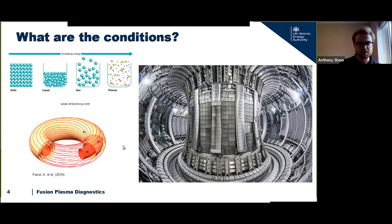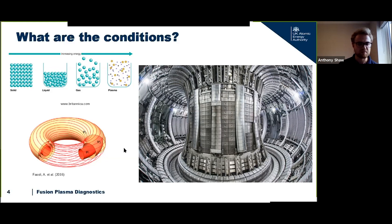That's what we do at UKAEA. We have two machines; the one I have most experience on is called JET, the Joint European Torus. This is an image of the inside of the machine. A human standing in the bottom would come up to about here on the machine — it's a pretty substantial piece of scientific kit. We're looking at trying to measure something that's about 10,000 times more rarefied than air and at 200 million degrees inside this chamber.